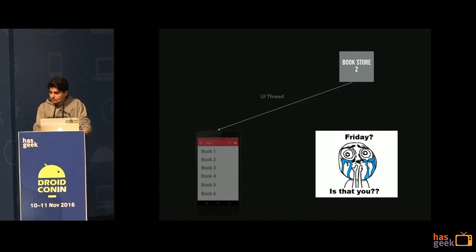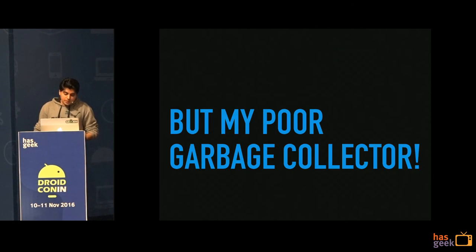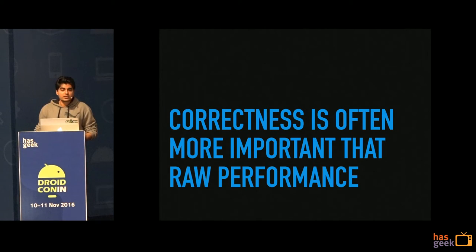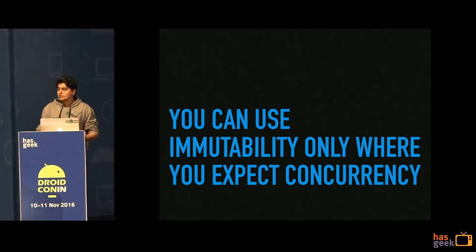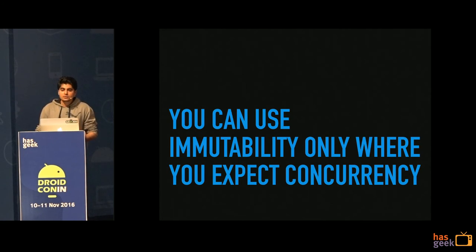This helps people go home on Friday, and Friday is beautiful. But 'my poor garbage collector' is something I always hear. Correctness is often more important than raw performance — I'd rather have a correct program than a fast incorrect program. I'm not saying change everything to immutable today and never use objects or variables again. What I'm saying is you can use immutability only where you expect concurrency. You know where your app has concurrency, you know some models will be processed in the background. Those things you can make immutable. And as always, measure, and if there's a problem, revert back and add locks.